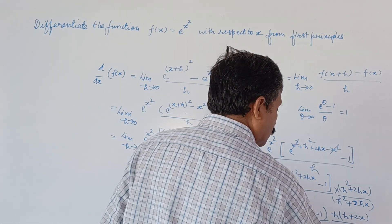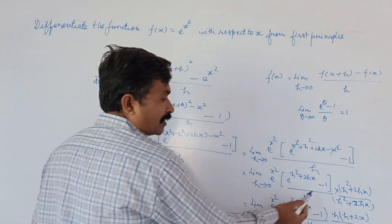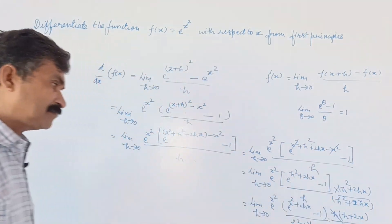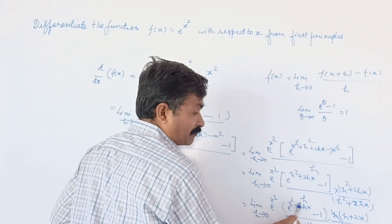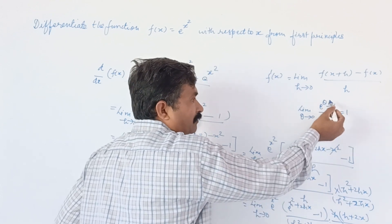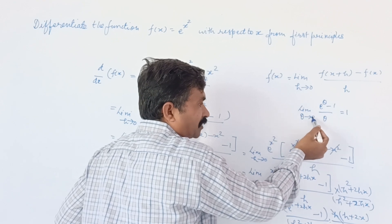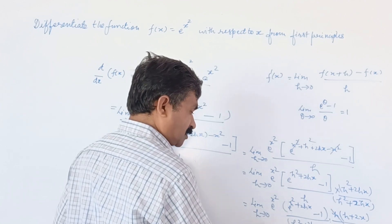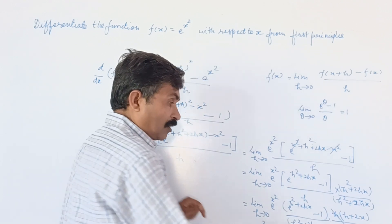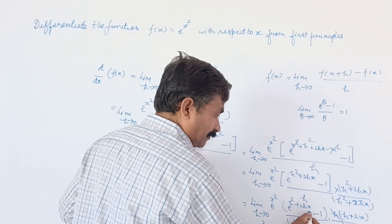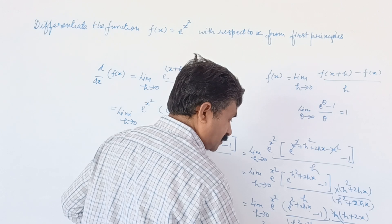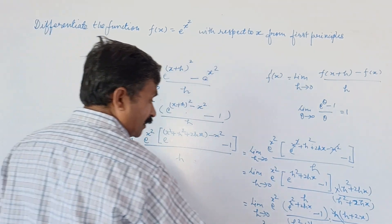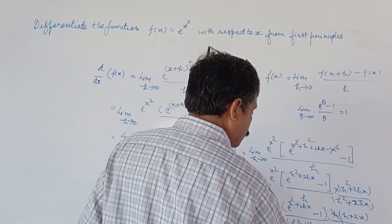Here, h and h in the numerator — we factor out h from h squared plus 2hx, giving h plus 2x, and the denominator h cancels. We apply the standard result: e raised to the power theta minus 1 upon theta, as theta tends to zero, equals 1. Applying this limit, as h tends to 0, we get e raised to the power x squared, and h plus 2x becomes 0 plus 2x.